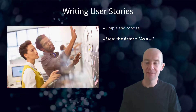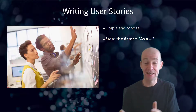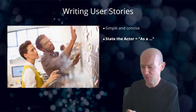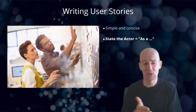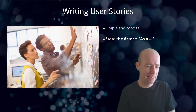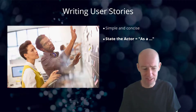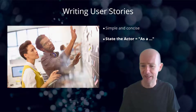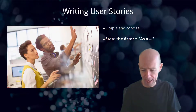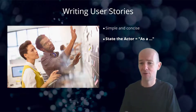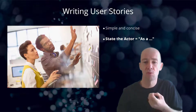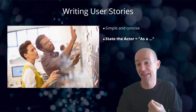The first thing you need to say is who are we talking about. You're not supposed to put someone's name — you put their role: as a sales advisor, as a receptionist, as a security guard, as a payroll officer. Those sorts of roles within the organisation — you say who is going to be benefiting from this user story.